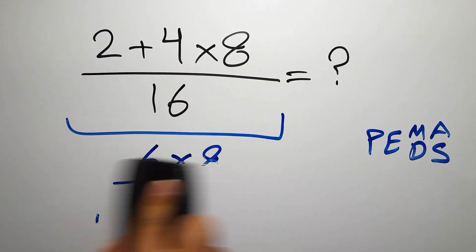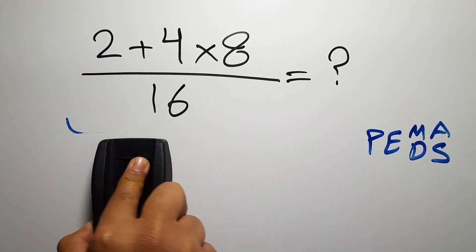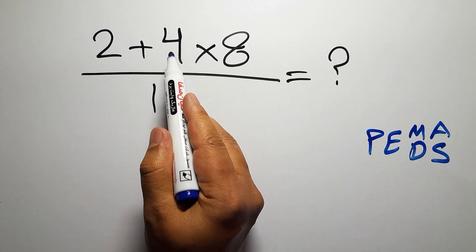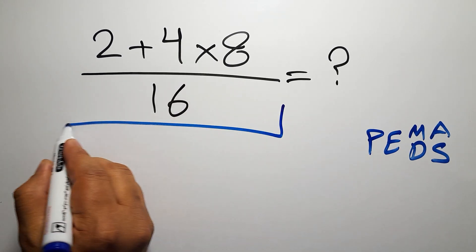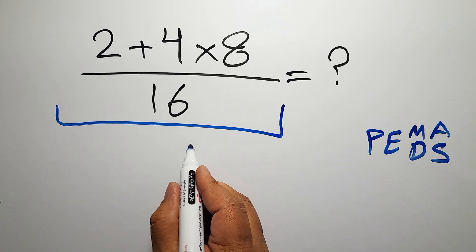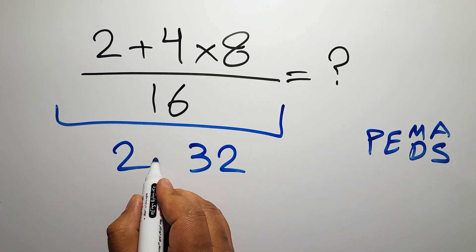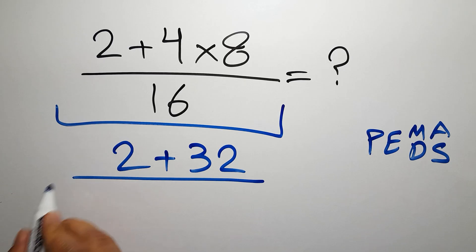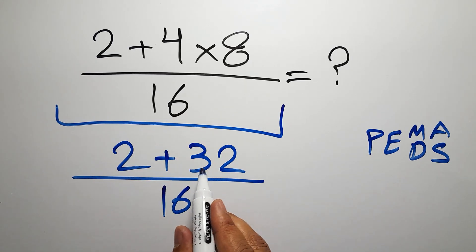4 times 8 gives us 32, so we have 2 plus 32 over 16. Now 2 plus 32 gives us 34.